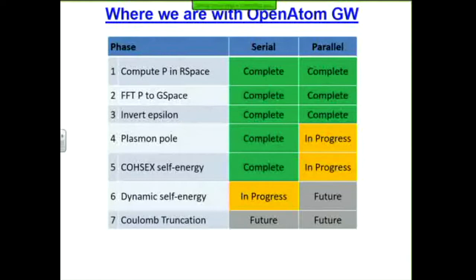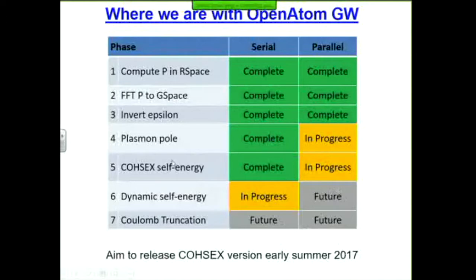Where are we right now? The modus operandi is: we develop methods in serial, then we talk to the folks at UIUC, discuss for three months the data structures, then we implement. The computation of P, the FFTs of P columns and rows, and inversion of epsilon are all done in parallel. We've implemented serial code for the plasmon pole and simplified self-energy; those two are in progress for parallel. The fancy self-energy is currently in progress in the serial code, and in the near future we'll be doing that in parallel. Our aim is that sometime early this summer, up to step number five, we'll make a public release — a well-scaling GW code with a very decent description of the self-energy. Now Minjoon Kim, a postdoc, will tell you about how to do the calculation better so the scaling is reduced.